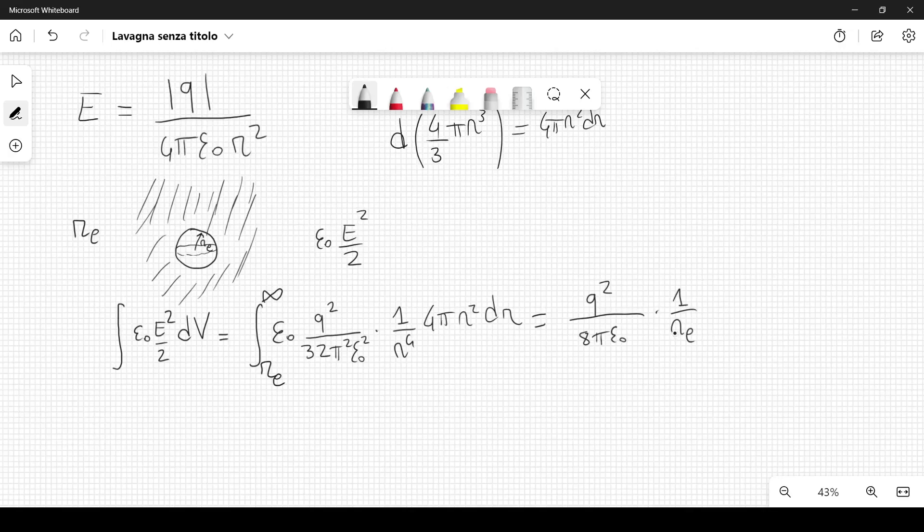The total energy of the charge would therefore be the following. We call it E zero, the total energy of the charge, which is equal to mc squared, and now I will tell you more about the constant m, plus the energy that we found here. So q squared divided by 8 pi epsilon 0 times 1 over r e.